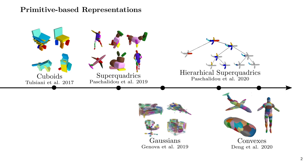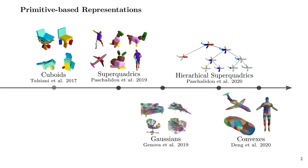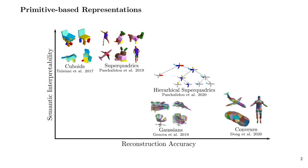They rely on simple shapes such as 3D cuboids, super quadrics, 3D anisotropic Gaussians, or more general convex shapes. In this paper we identify that there exists a trade-off between the reconstruction quality and the number of parts in primitive-based methods. Due to their simple parametrization, existing primitives have limited expressivity and require a large number of parts for capturing complex geometries. However, using more parts results in less interpretable abstractions since they do not correspond to identifiable parts.